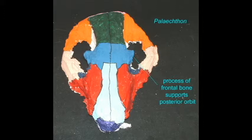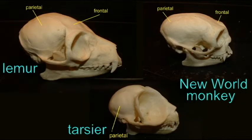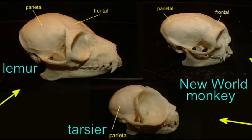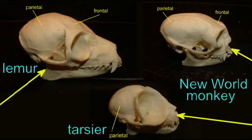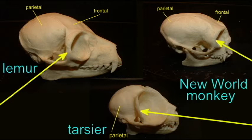While the plesiadapiform forms of the Paleocene did not possess a post-orbital bar, although they did possess processes on the frontal bone which perhaps were the beginnings of such a bar, the post-orbital bar is a feature of primates. Prosimians, monkeys, and apes all possess a post-orbital bar. The frontal bone and zygomatic bone make contact on the lateral side of the eye, surrounding it in bone and protecting it. The presence of this post-orbital bar is a defining primate feature.